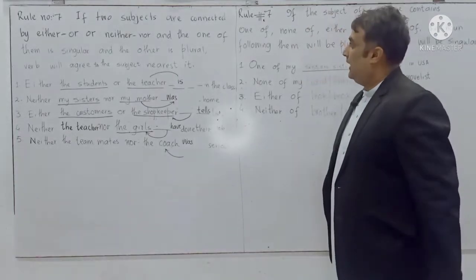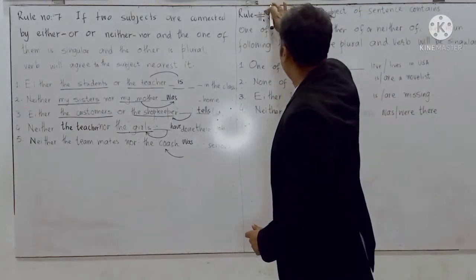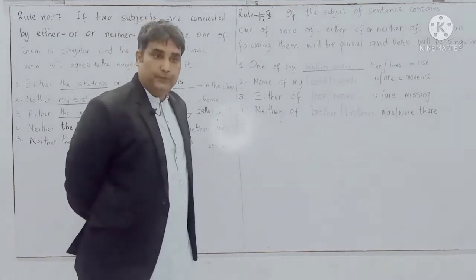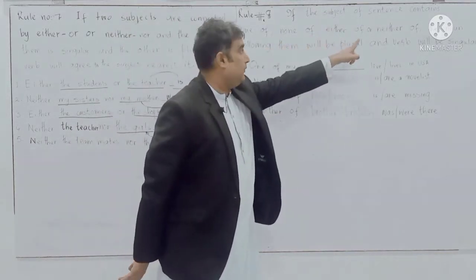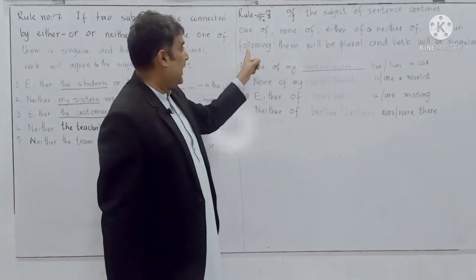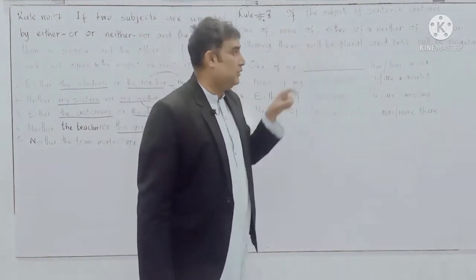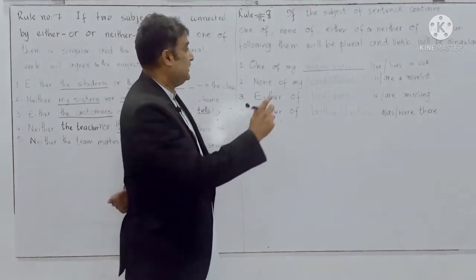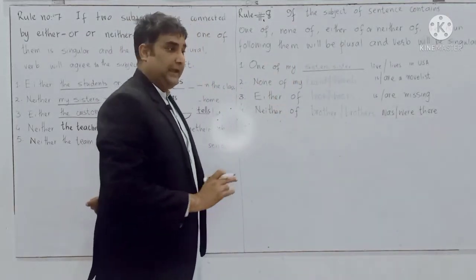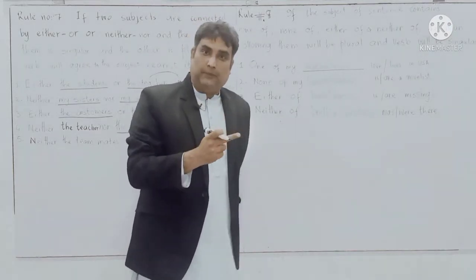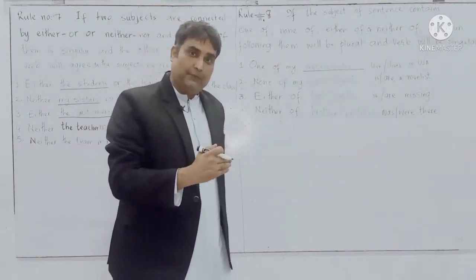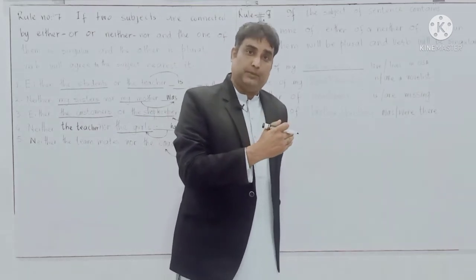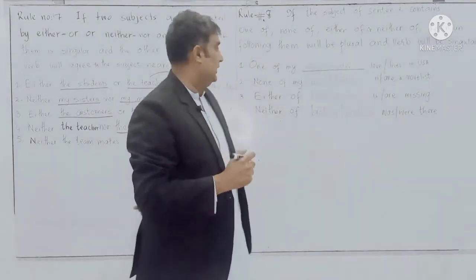Now moving ahead to rule number eight. If the subject of a sentence contains 'one of,' 'none of,' 'either of,' or 'neither of,' the noun following them will be plural and the verb will be singular. There are two things to note: the noun after 'one of,' 'none of,' 'either of,' or 'neither of' will always be plural, and the verb following will be singular.